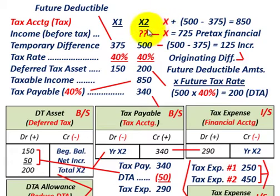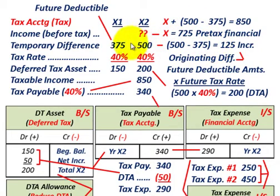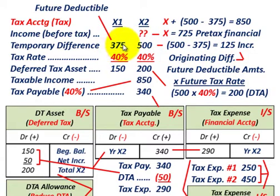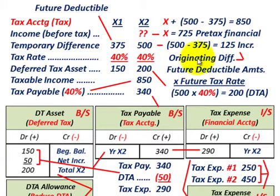You take X as our unknown — income before taxes — and then compare the incremental or originating difference for the year on this temporary difference. It increases from $375,000 to $500,000, giving us an originating difference for year X2 of $125,000.